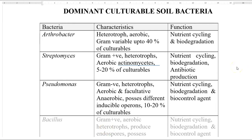The next dominant culturable organism is Streptomyces. Both Arthrobacter and Streptomyces belong to Actinobacteria. They are gram positive, heterotrophic, and mainly aerobic, and they constitute about 5 to 20% of the culturable portion of the soil. They are involved in nutrient recycling — that is, carbon, nitrogen, sulfur, and phosphorus cycling — as well as biodegradation. In addition, they produce different kinds of antibiotics in the soil system.